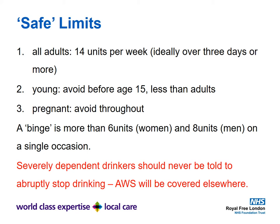Younger people should avoid alcohol before the age of 15, and should drink less than adults. We would advise caution as we have limited safety data for children. In pregnancy, we should recommend people avoid alcohol throughout. A binge is defined as more than six units for women and eight units for men on a single occasion. Importantly, severely dependent drinkers should never be told to abruptly stop drinking, due to the risk of alcohol withdrawal syndrome, which can initially cause sweating and tachycardia but can lead on to fits.